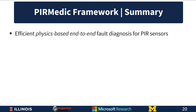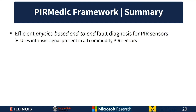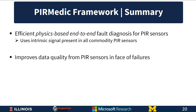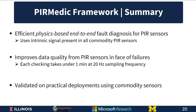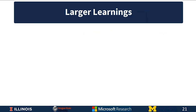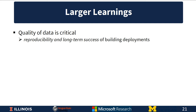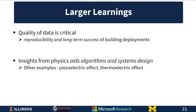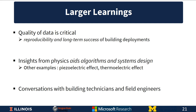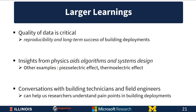In summary, PAR Medic is an efficient physics-based end-to-end fault diagnosis system for PIR sensors that uses an intrinsic signal present in all commodity PIR sensors. Each check takes under one minute at 20 Hz sampling frequency, validated on practical deployments using commodity sensors. Key learnings are that data quality is critical to reproducibility and long-term success of building deployments, physics insights can aid algorithm and system design — as seen with the pyroelectric, piezoelectric, and thermoelectric effects — and conversations with building technicians help researchers understand real pain points.